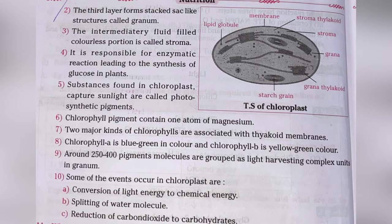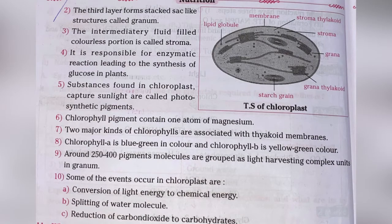Substances found in the chloroplast that capture sunlight are called photosynthetic pigments. Chlorophyll pigment contains one atom of magnesium. Two major kinds of chlorophylls are associated with the thylakoid membrane. Chlorophyll A is blue-green in color and chlorophyll B is yellow-green in color. Around 250 to 400 pigment molecules are grouped as light harvesting complex units in the granum. Some events that occur in the chloroplast are: conversion of light energy to chemical energy, splitting of water molecules, and reduction of carbon dioxide to carbohydrates.